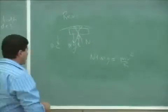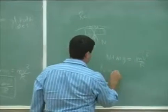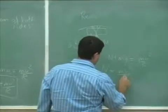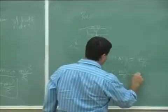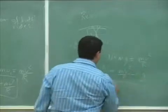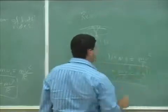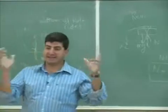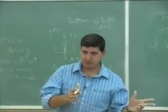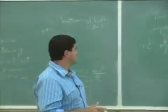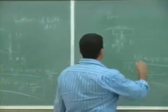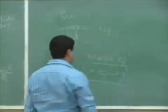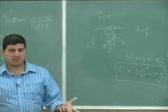So in this case, the normal force equals — this is the general equation for the normal force at the top of the revolution type ride. Let's call this the top. And now we can analyze this.